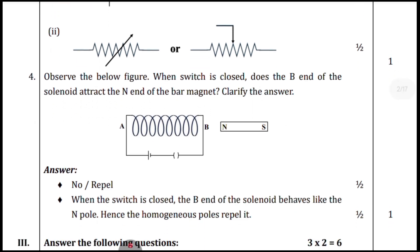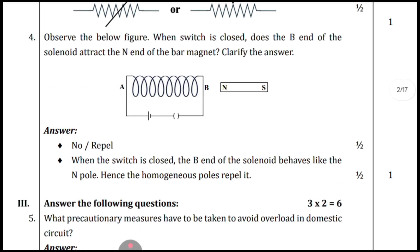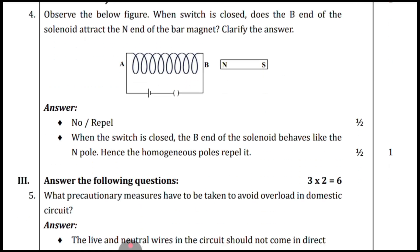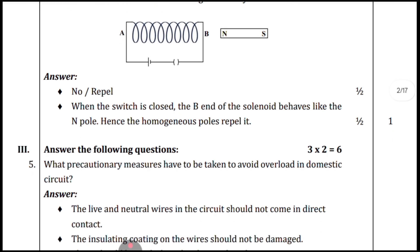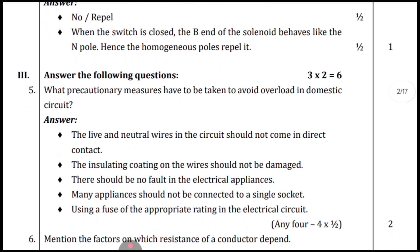Question four: observe the given figure. When the switch is closed, does the B-end of the solenoid attract the N-end of the bar magnet? The correct answer is No — it will repel. When the switch is closed, the B-end of the solenoid behaves like the N-pole; hence the homogeneous (like) poles repel. This is the correct two-point answer.